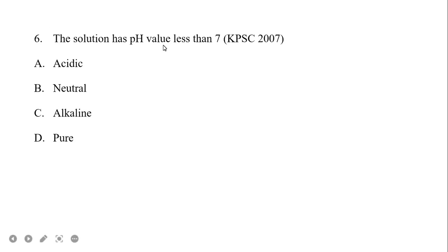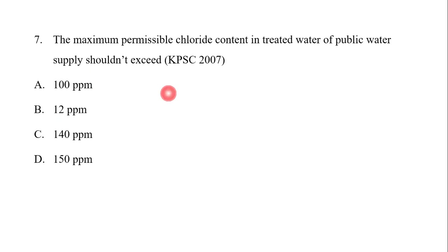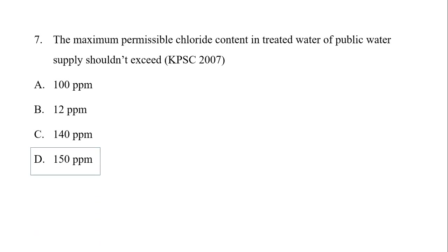A solution with a pH value less than 7 is acidic; greater than 7 is alkaline. Maximum permissible chlorine content in treated water for public water supply should not exceed 150 parts per million.